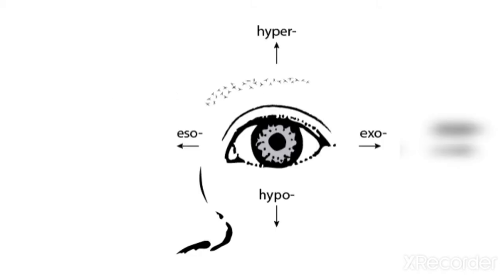Next, we have directional prefixes like hyper, hypo, exo, and eso. If the squint is upward, we call it hyper. If it is downward, we call it hypo. If it is toward the nose, we call it eso. And if it is toward the ear, we call it exo.